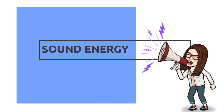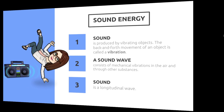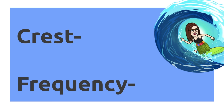Sound is produced by vibrating objects. The back-and-forth movement of an object is called a vibration. A sound wave consists of mechanical vibrations in the air and through other substances. Sound is a longitudinal wave.